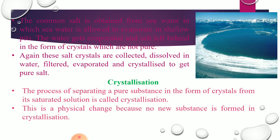We can obtain pure common salt from sea water. Sea water is allowed to flow into shallow pools, which are then filled and left for the sun's heat to evaporate the water, leaving salt crystals behind. These crystals are not pure enough to use directly, so they are purified: collected from the pools, sent to mills, dissolved in fresh water, filtered, evaporated again, and then crystallized to get pure salt.